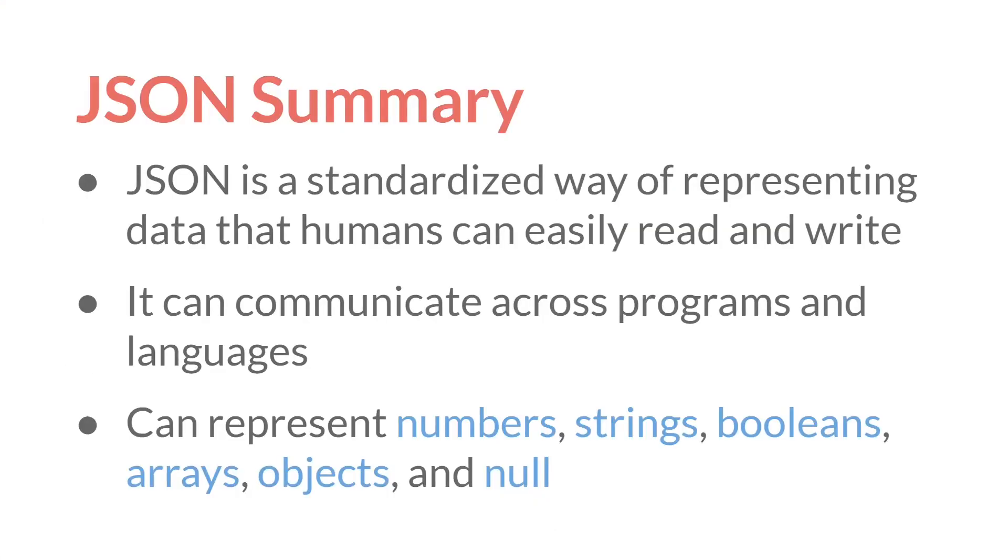In summary, JSON is a standardized way of representing data that humans can easily read and write. You can communicate across programs and languages. You can use it to represent numbers, strings, booleans, arrays, objects, and the value null.